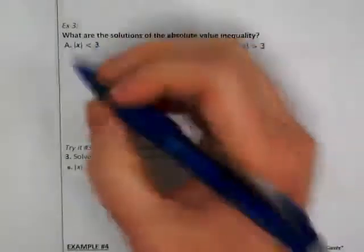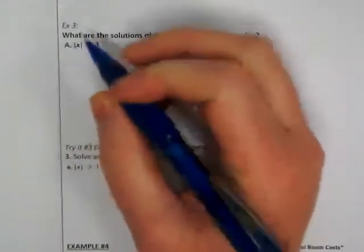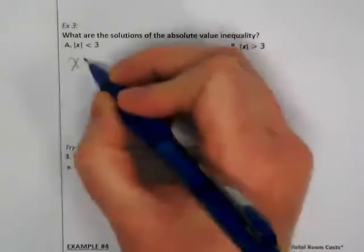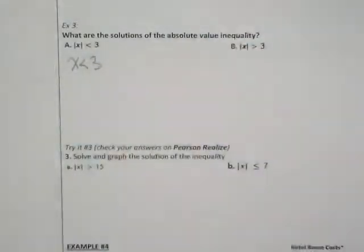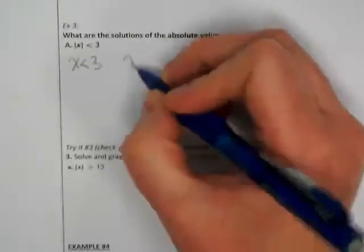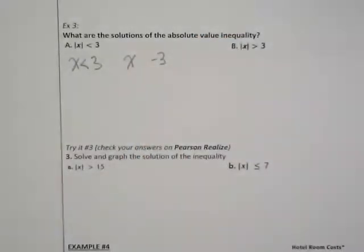These, like the equations, when we remove the absolute value bars, we do a positive version and we do a negative version. But what do you guys think happens with the symbol when we do the negative version?